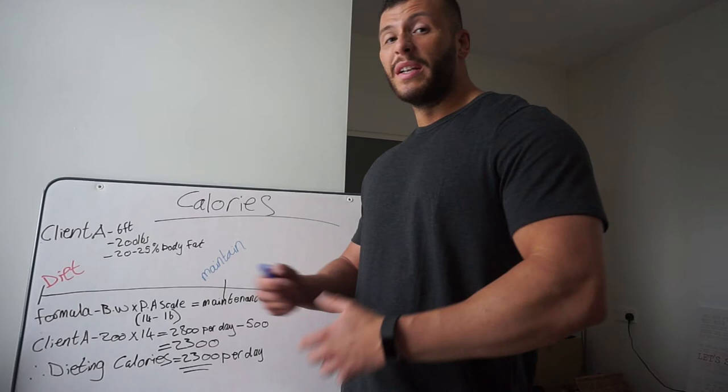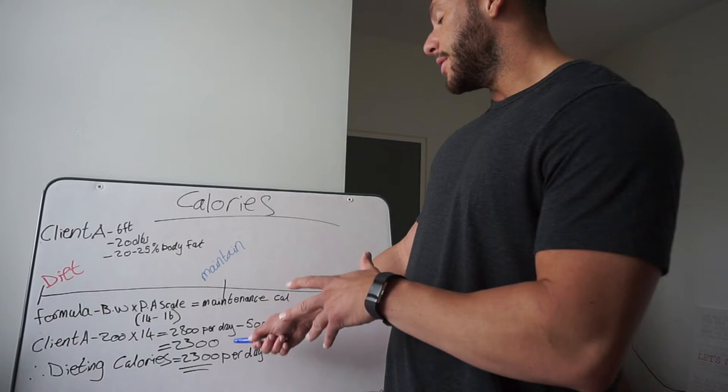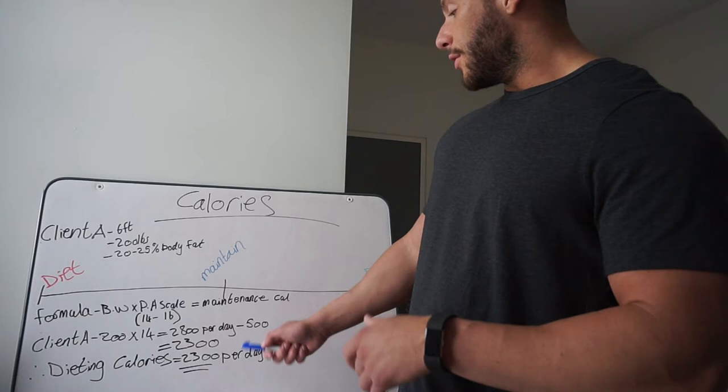So we're going to multiply 200 by 14, that gives us 2800 calories per day. That's his maintenance calories to maintain his current weight. What we're going to do then is subtract 500 to get 2300. That's going to be his dieting calories. So now we can move on to work out and break down his fat intake, protein intake, and carb intake.